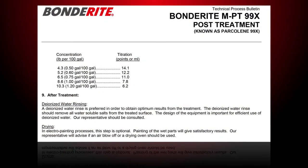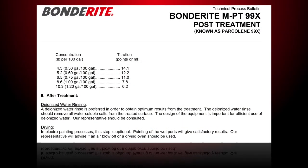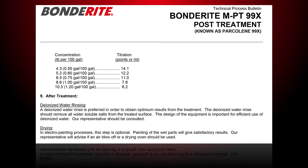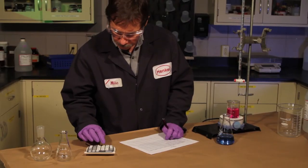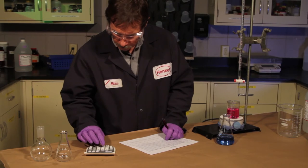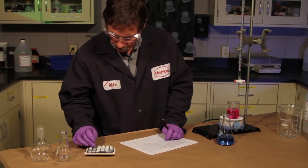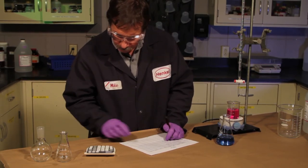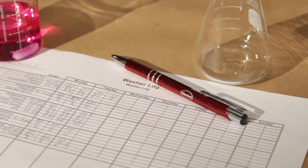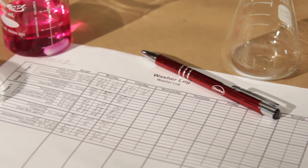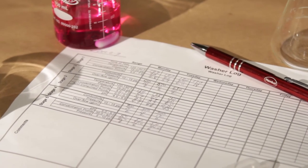The Henkel product data sheet will specify how many points or milliliters of solution to use to control your process. Now that you have measured the number of milliliters, you can compare that with your process control points and use the calculation or chart provided to determine if it is in specification or requires additions or adjustment. Record your values in a log sheet or other quality records and make note of any additions that are required.